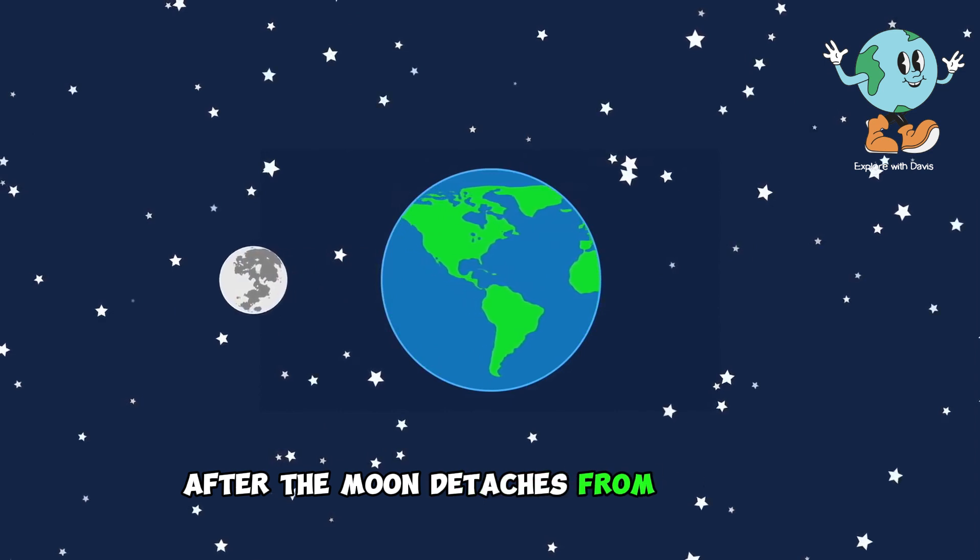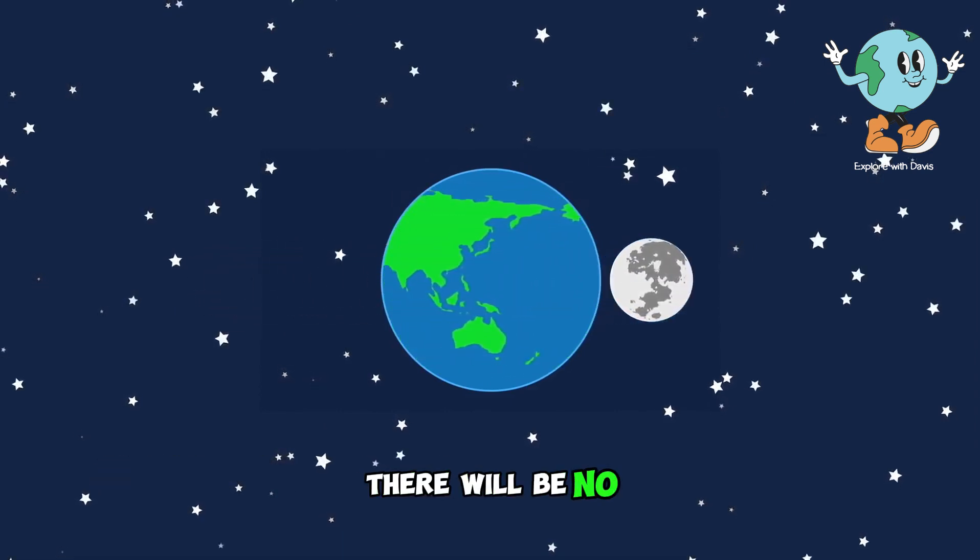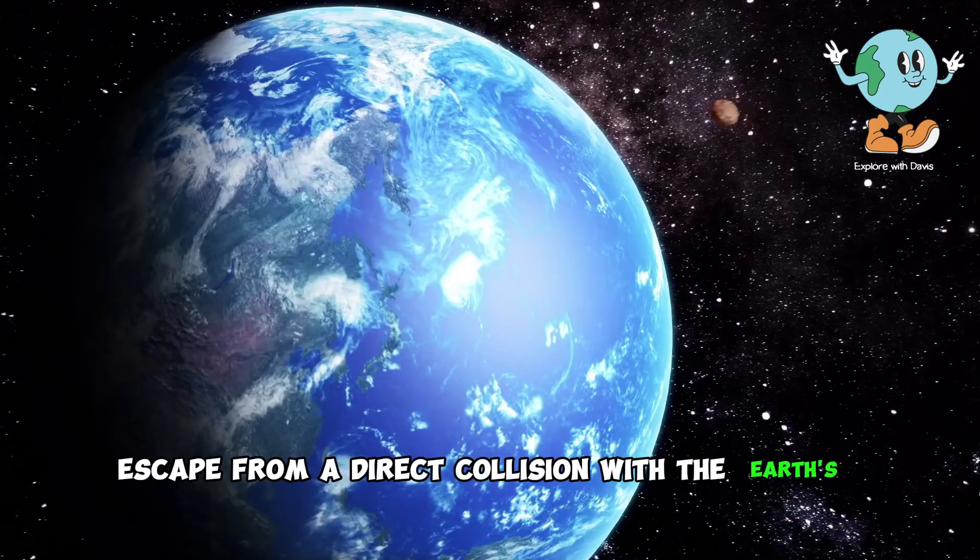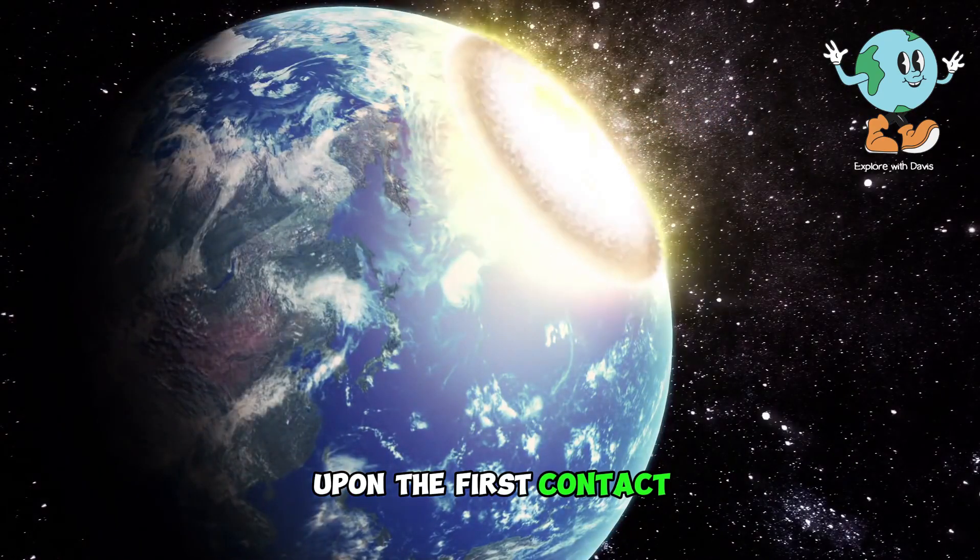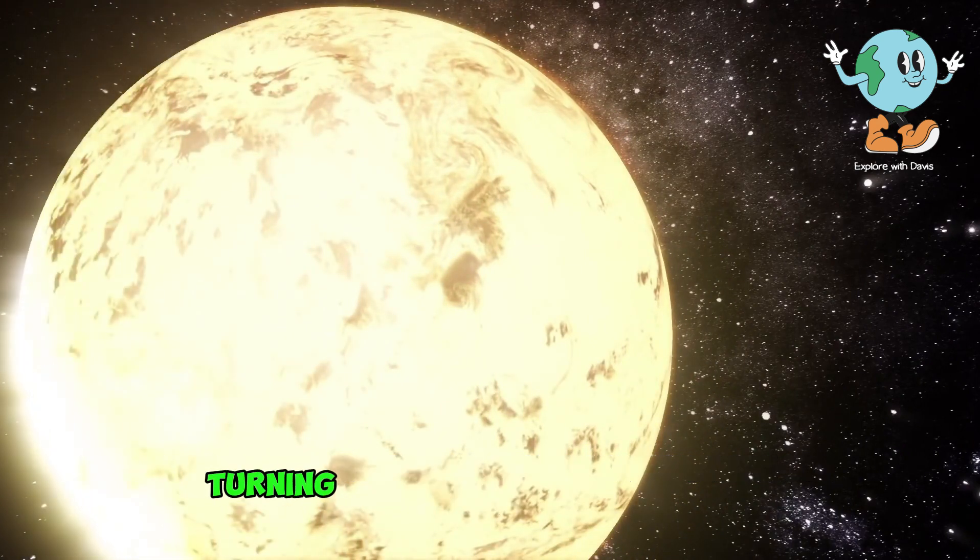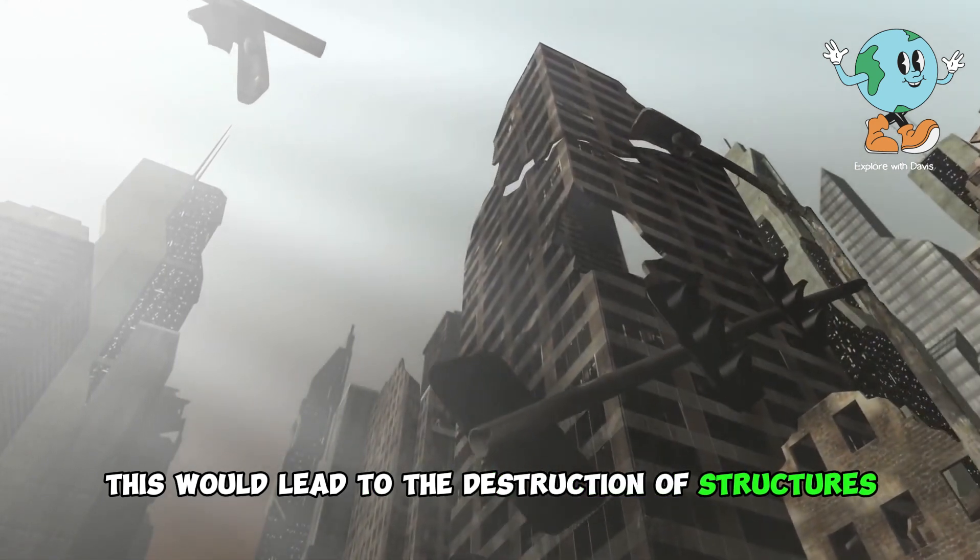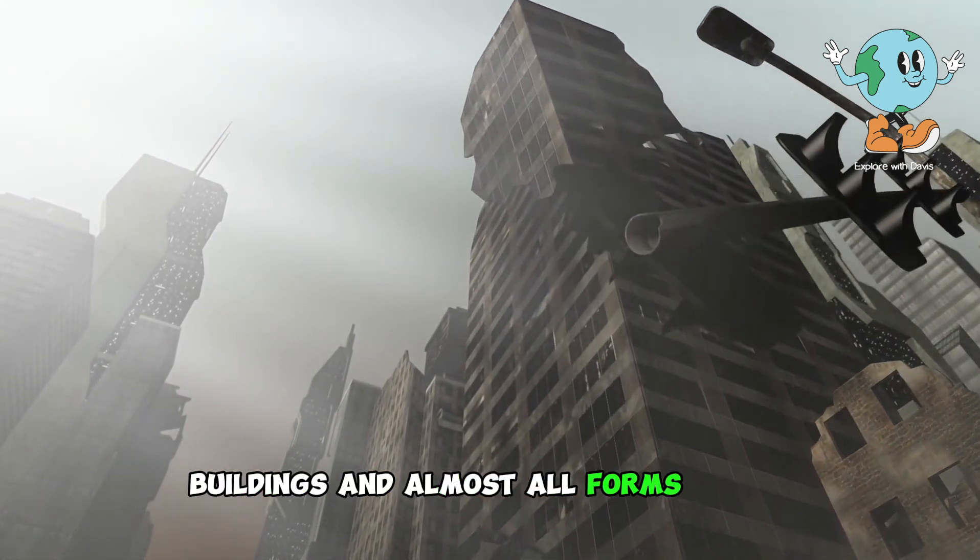After the moon detaches from its orbit and covers the entire distance between it and Earth, there will be no escape from a direct collision with Earth's surface. Upon first contact, there would be a massive explosion that would result in a drastic increase in temperatures, turning Earth into a fiery mass. This would lead to the destruction of structures, buildings, and almost all forms of life.